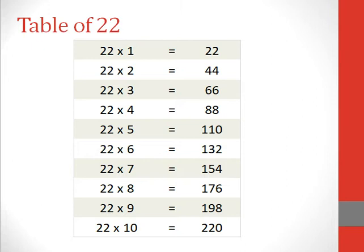22 6s are 132, 22 7s are 154, 22 8s are 176, 22 9s are 198, 22 10s are 220.